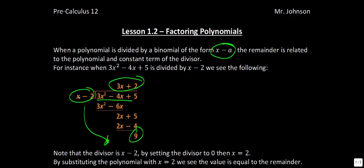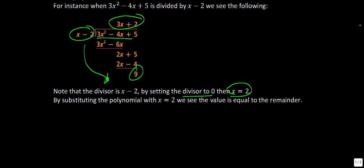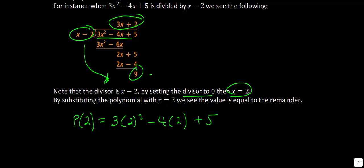If you take our binomial — the divisor, in this case x minus 2 — and set it equal to 0, we see that x is equal to 2. The Remainder Theorem gives us an easier way to find what our remainder is. Rather than doing long division, we simply take our polynomial and substitute in whatever the divisor gives us. So we substitute in 2 everywhere we see an x, and we get the same remainder of 9: 2 squared is 4, 4 times 3 is 12, 12 minus 8 plus 5 gives us 9.